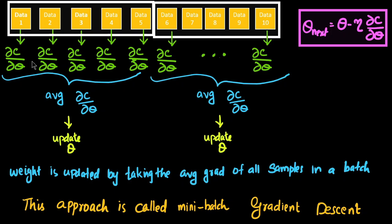In mini batch, we also have to memorize the gradients within a batch — for example, with five samples per batch, you memorize the derivatives of the first through fourth, and when you get the fifth you compute the sum. If you have millions of data with thousands per batch, this can be a memory constraint. However, mini batch is the most widely used method in practical applications. If you have memory constraints, you should go for stochastic gradient descent.